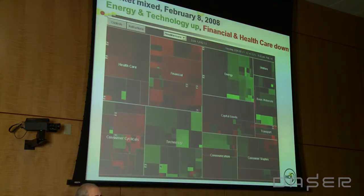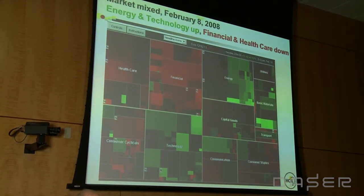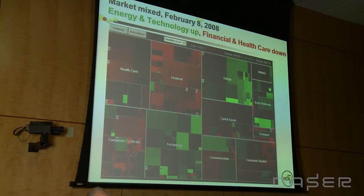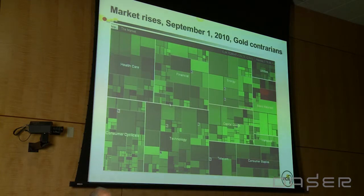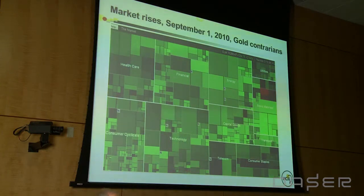Here's a more subtle one. Energy is a good day — green for energy, and green for technology with a couple of exceptions. But bad day for financial stocks: banks, insurance companies, investments. And health care too, with one bright exception. On a good day, you can see the gold stocks — because of the spatial stability of the design, I've come to know that when the stock market's up, the gold stocks are kind of down. That's the contrarian story you begin to learn about economics by seeing these patterns.